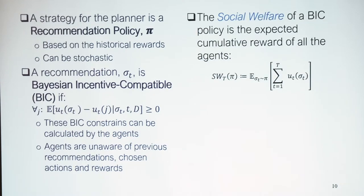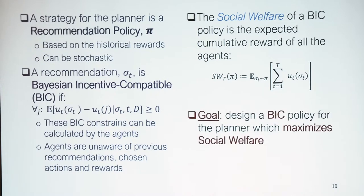The social welfare of a Bayesian incentive compatible policy is simply the expected cumulative reward of all agents. When handling a BIC policy, we can assume all agents follow their recommendations and define social welfare as the expected cumulative reward. The goal is to design a BIC policy for the planner that maximizes social welfare.